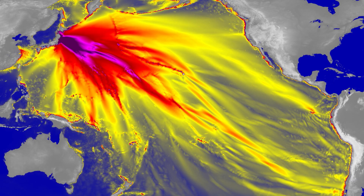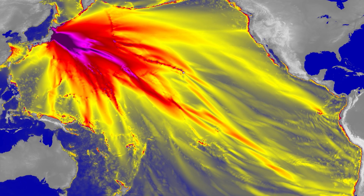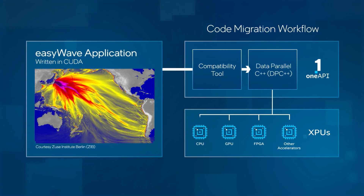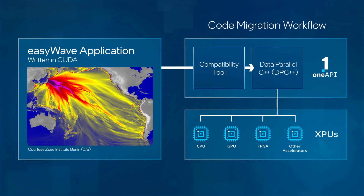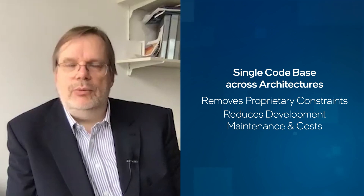We took the EasyWave code, which is written in OpenCUDA for GPUs and OpenMP for CPUs, applied the Intel OneAPI toolset, specifically the Compatibility tool, and migrated the existing code to DPC++. With that, we are able to maintain within the single source code base multiple devices — CPUs, GPUs, and FPGAs.